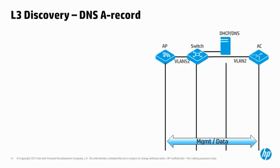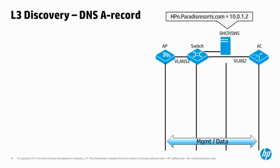DNS can also be used to help the AP find an AC. DNS name lookup is based on A records, which is a simple name entry such as hp.com along with an associated IP address. You can simply add a standard A record to your internal corporate DNS server. The AP is set from the factory to request the name hpn.domainname.com. So here at Paradise Resorts, we would add an A record to our DNS server that maps the name hpn.paradiseresorts.com to the IP address 10.0.1.2. We must also ensure that our DHCP scopes are configured to provide the IP address of the DNS server.